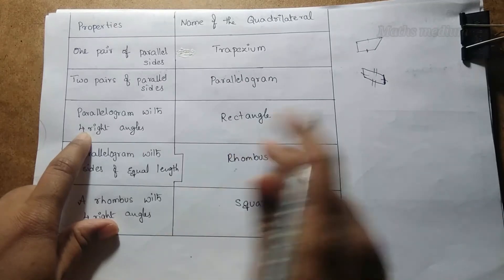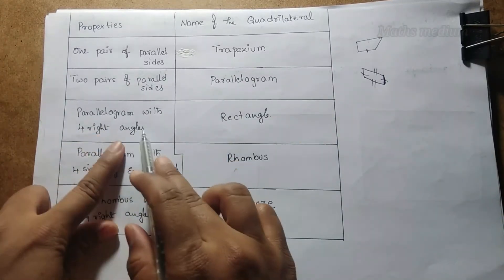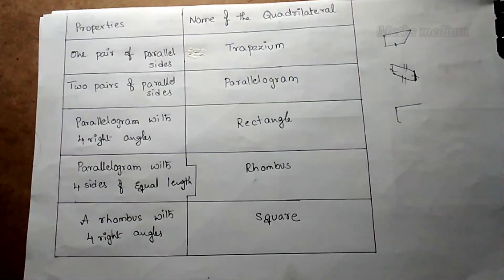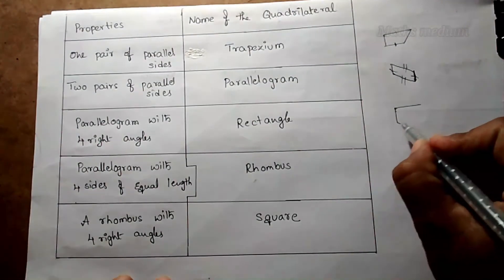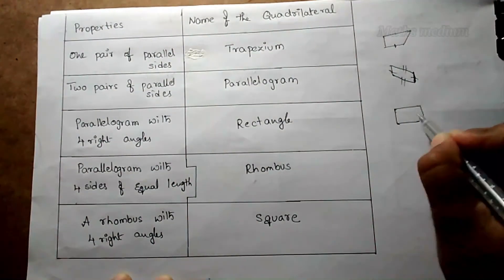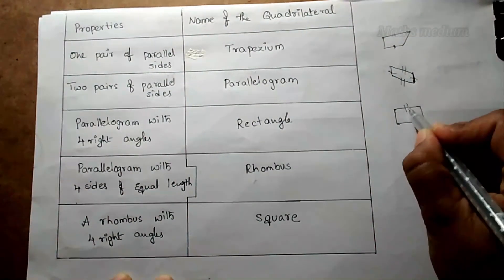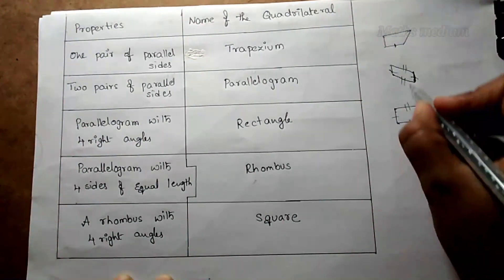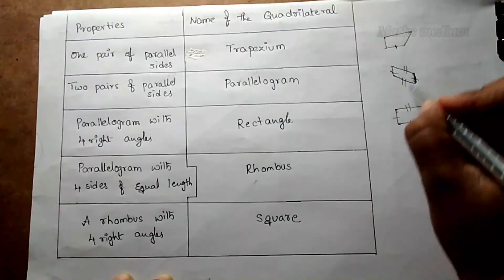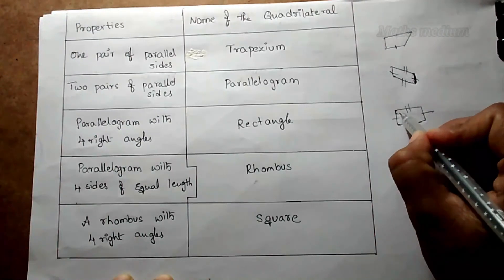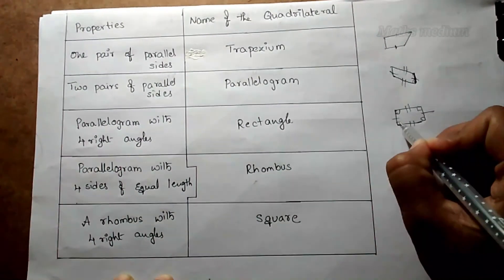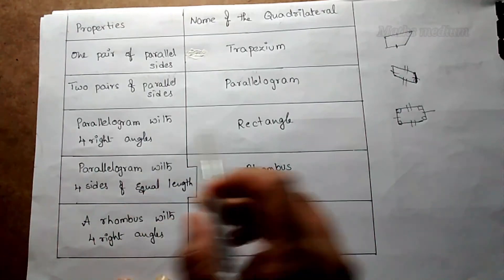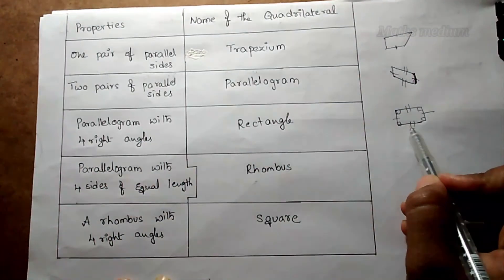Next, coming to the rectangle. A rectangle is a parallelogram with four right angles. In a rectangle, we have four sides same as a parallelogram with opposite sides equal, but in a parallelogram we do not have right angles. In a rectangle, we have four right angles — that is the key property.